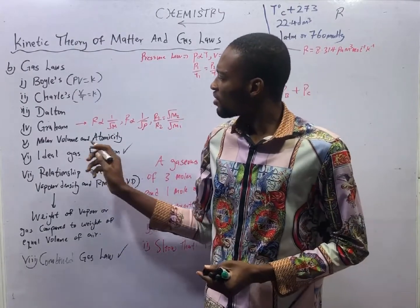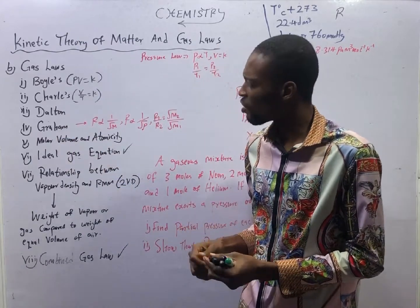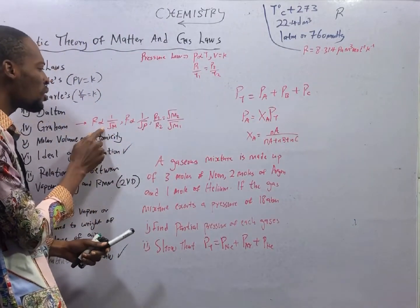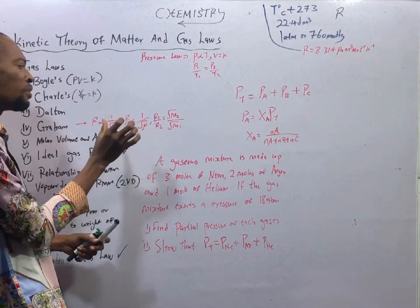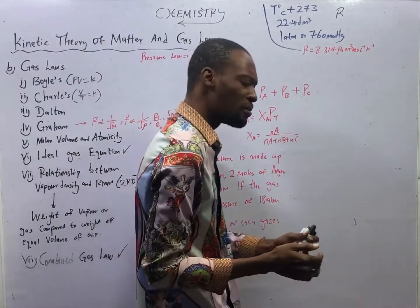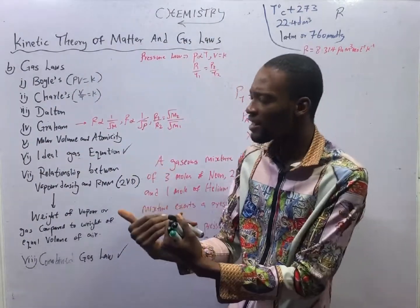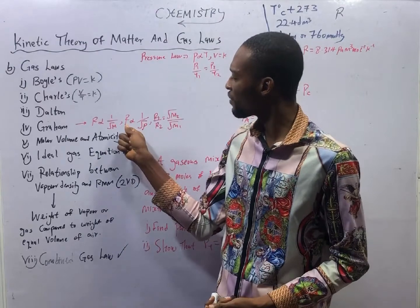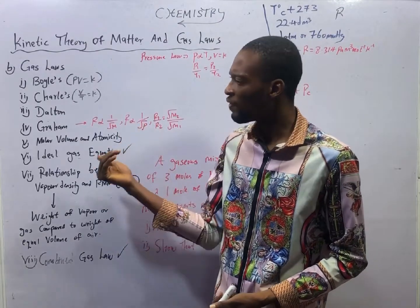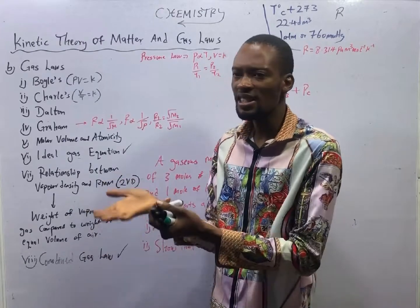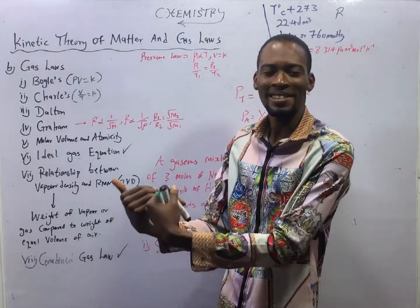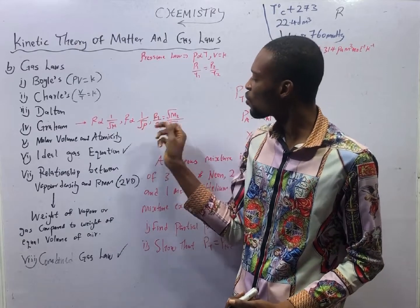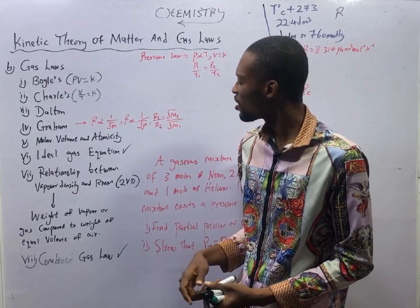Graham's Law of Diffusion states that the rate of diffusion or effusion of any gas is inversely proportional to the square root of the molar mass or to the square root of the vapor density. This means the higher the mass of a gas, the lower the rate of diffusion; and the smaller the mass of a gas, the higher the rate of diffusion. The rate of diffusion is inversely proportional to the square root of density. As density increases, the rate of diffusion will reduce; as density reduces, the rate of diffusion will increase. From here, we see that R1 over R2 equals the square root of M2 over the square root of M1.